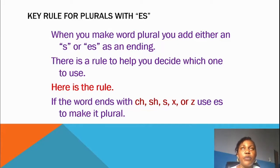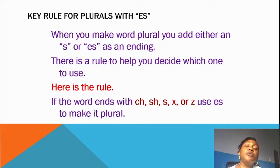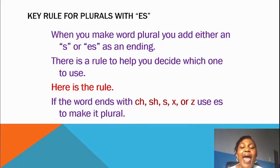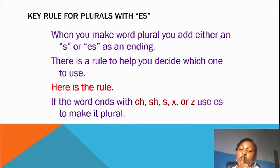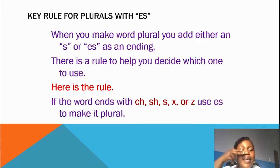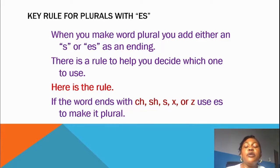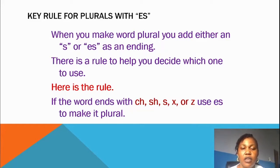Let me explain. The words you did before, like BAG — B-A-G — when you want to write the plural, you just add S. But a word that ends with CH, or SH, or SS, or X, or Z — when you want to write the plural, you use ES to form the plural. Do you understand?